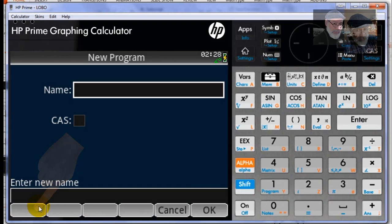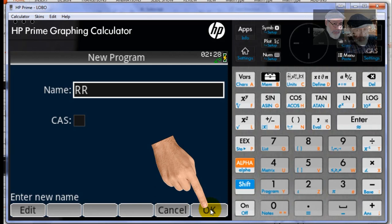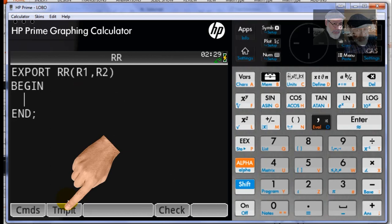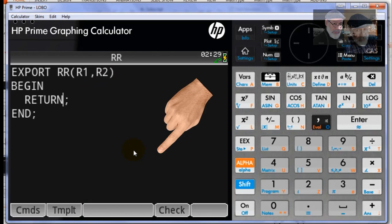When we do OK, the calculator will create a template for us to fill out. Export the name of the function. We enter the parameters that we're going to pass to the program. And then under templates, block, we have the word return. Fill out the rest. Returns the product of R1 and R2 divided by their sum. Check.